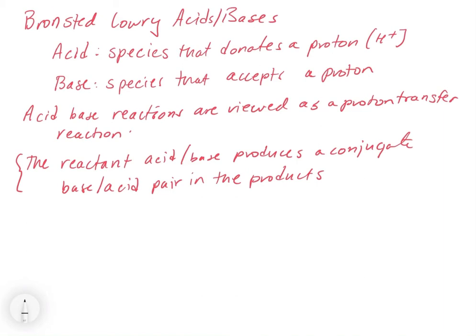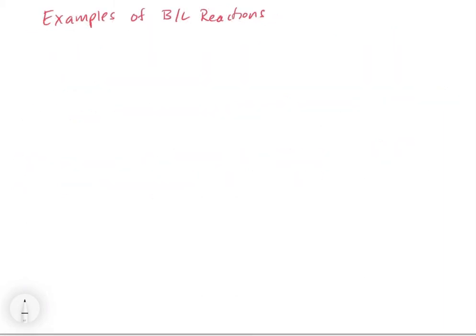One example of a Bronsted-Lowry acid-base reaction is the reaction of acetic acid with water. Acetic acid has that chemical formula, and if we think back to our understanding of acids and bases, we know from memorization of the strong acids that acetic acid is not a strong acid. So we're going to set up this idea that when we don't have a strong acid, we're going to wind up at an equilibrium — I'm going to write in the equilibrium bars here. In the next video, we'll look at relative acid and base strengths and start to distinguish when we have an equilibrium versus when we don't.